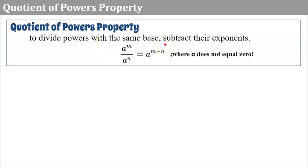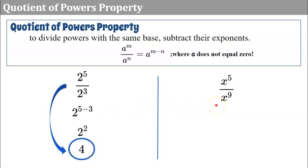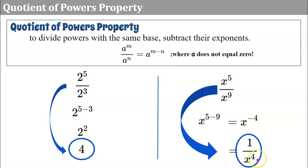The quotient of powers property states that to divide powers with the same base, we subtract the exponents. So a to the m divided by a to the n equals a to the exponent m minus n, where a cannot be zero. For example, two to the fifth divided by two to the third: subtract exponents, five minus three equals two, and two squared is four. For x to the fifth divided by x to the ninth: five minus nine equals negative four, so we clear the negative exponent to get one over x to the fourth.